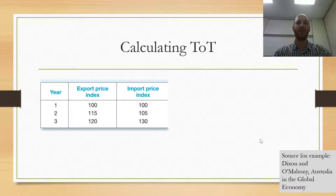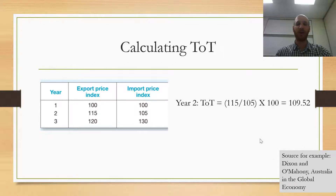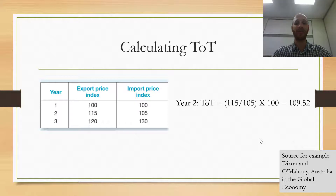We've got 3 years. Year 1 here is the base year — we don't need to do anything with that year. We can see years 2 and year 3, and we need to work out what is the terms of trade. For year 2, I'm going to do export price index 115 over import price index 105 times 100, which gives me 109.52. So between year 1 and year 2 the terms of trade has improved.